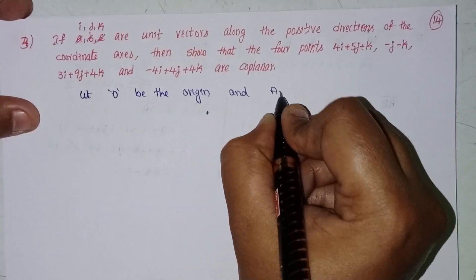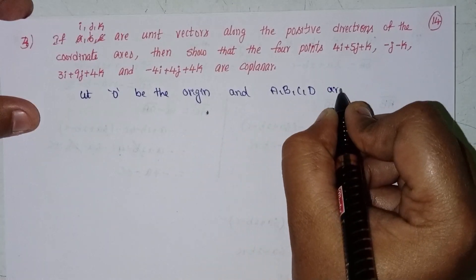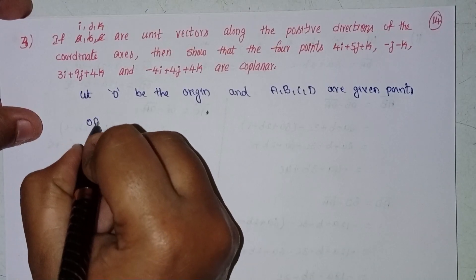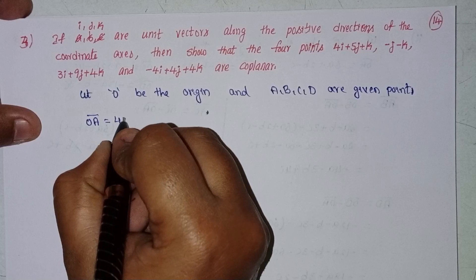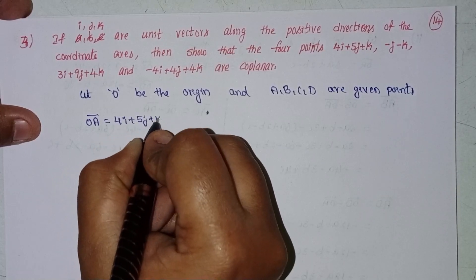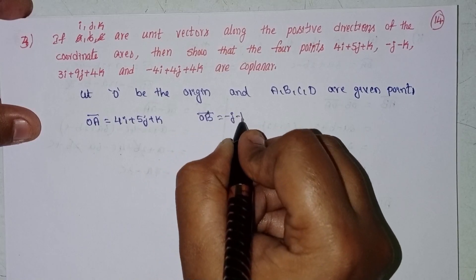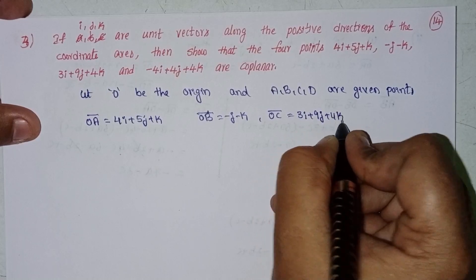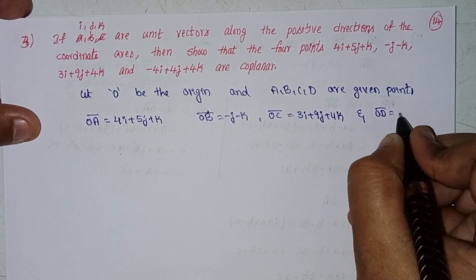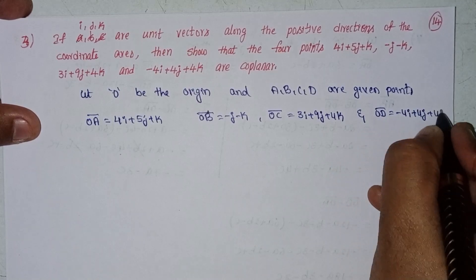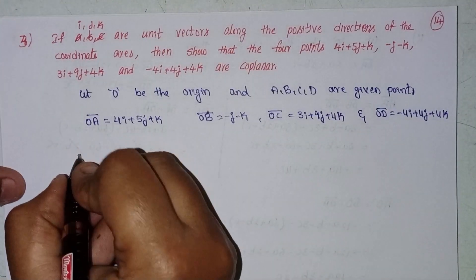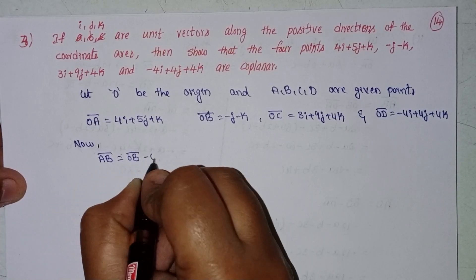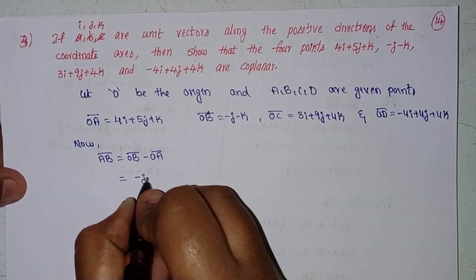Let O be the origin, and A, B, C, D are the given points. Then OA = 4i + 5j + k, OB = -j - k, OC = 3i + 9j + 4k, and OD = -4i + 4j + 4k. Now, AB = OB minus OA = (-j - k) minus (4i + 5j + k).